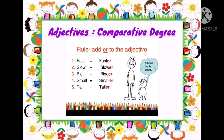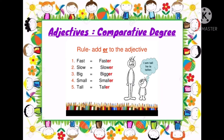Now let's have a look at the rules to change adjectives into comparative degree. First rule: we add ER to the adjective. By simply adding ER at the end of some adjectives, they turn into comparative degree. For example: fast becomes faster, slow becomes slower, big becomes bigger, small becomes smaller, and tall becomes taller.